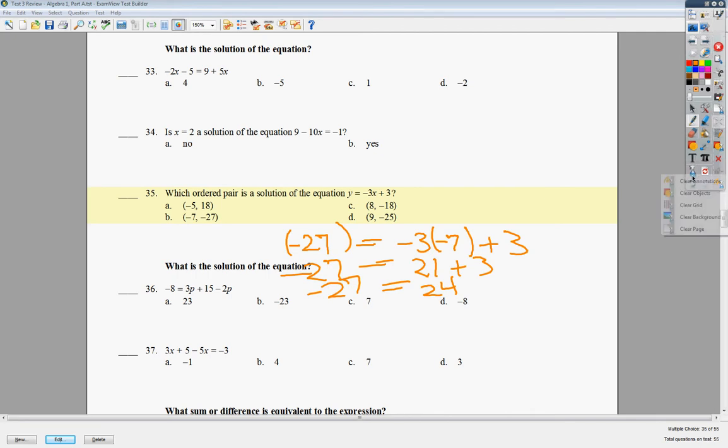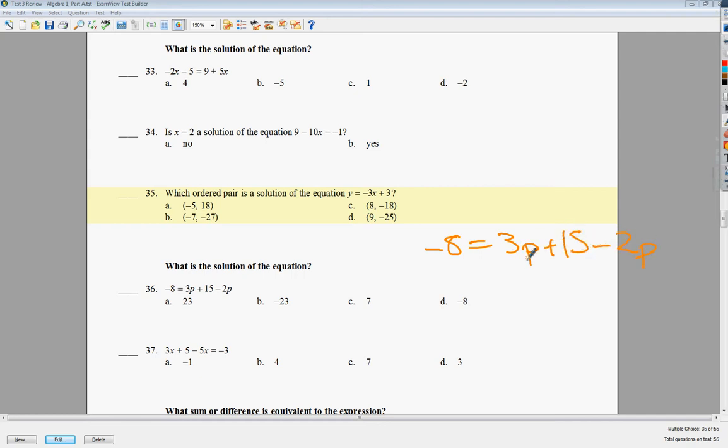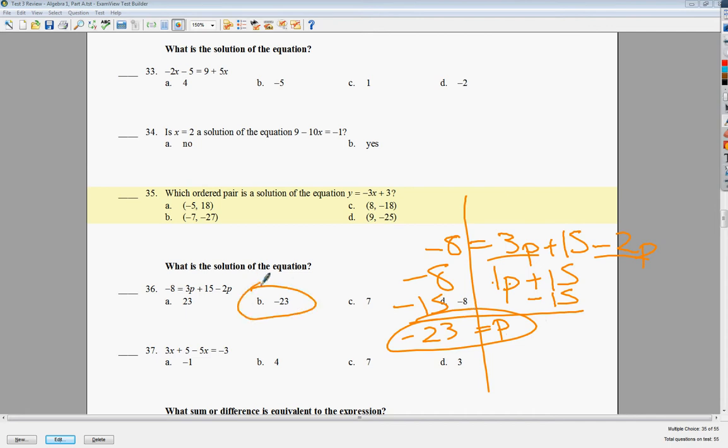Number 36 is another solving equations question, because that's kind of where we are in the whole scheme of things. I'm just trying to get you good at them so that we can move on to another topic soon. But if you don't get good at these, you're kind of doomed for a while. Draw your line. Here's my like term, 3 minus 2. They're on the same side, so I just do what it says. 1p plus 15. To get rid of plus 15, I'm going to subtract. P is equal to negative 23. If you feel like it, you can divide by 1 here, but you don't need to. So the answer to number 36 is B.